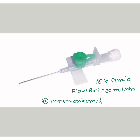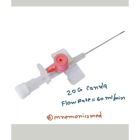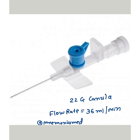This is the 18 gauge cannula — flow rate is 90 ml per minute. It is a green color cannula. You have to remember this image via this mnemonic. This is the 20 gauge cannula — flow rate is 60 ml per minute. It is a pink color cannula.